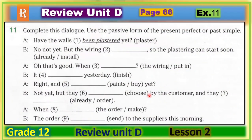Now let's move to Exercise 11: complete this dialogue using the passive form of the present perfect or past simple. Be careful — we are going to use two tenses: the present perfect and the past simple. Let's look at the first example: 'Have the walls been plastered yet?' Take your time to complete the rest, then play the video again to check your answers.